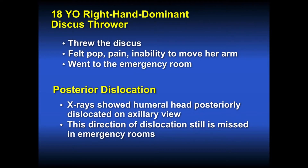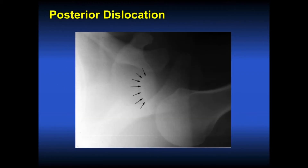This individual is an 18-year-old right-hand dominant discus thrower. She threw the discus, felt a pop, pain, and was unable to move her arm. She went to the emergency room where radiographs showed a humeral head posterior dislocation on the axillary lateral view. It is unusual to still have the humeral head out of place after an athletic movement. The direction of dislocation is still missed in emergency rooms — they lack external rotation and have the light bulb sign with the humeral head fixed in internal rotation.